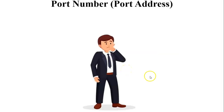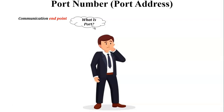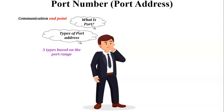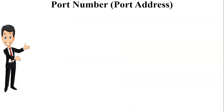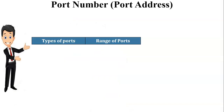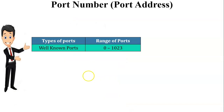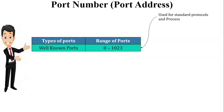Next is the port address. A port is a communication endpoint. Port numbers are assigned at the transport layer based on the protocol and the services of the application. There are three types of port address based on their range.